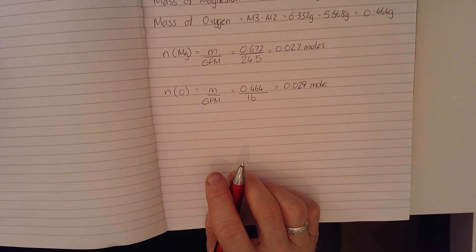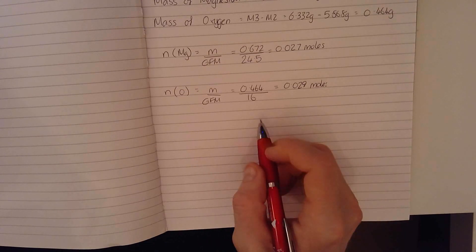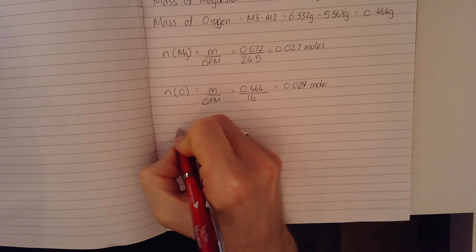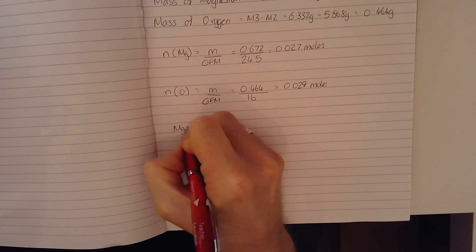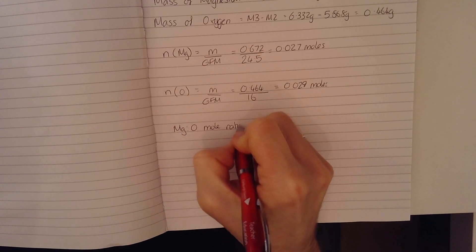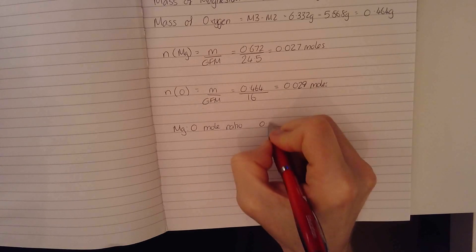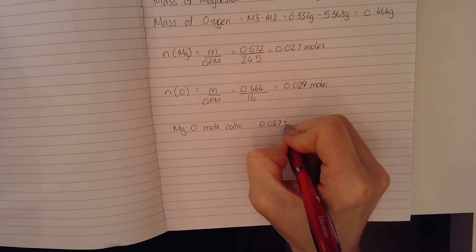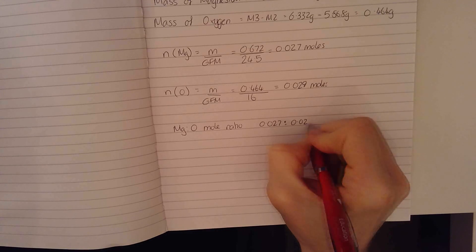So my final step then is to work out the simplest mole ratio. So the mole ratio, if I work out the magnesium to oxygen mole ratio, it is 0.027 to 0.029.